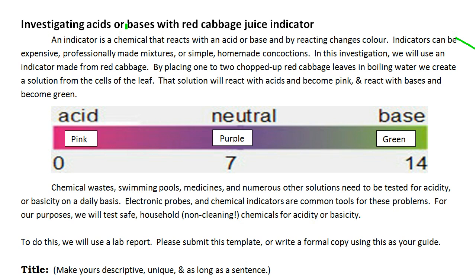What we're going to do is investigate some acids or bases with a red cabbage juice indicator. An indicator is a chemical that reacts with an acid or a base and by reacting changes color. Indicators can be expensive professionally made mixtures or some simple homemade concoctions.